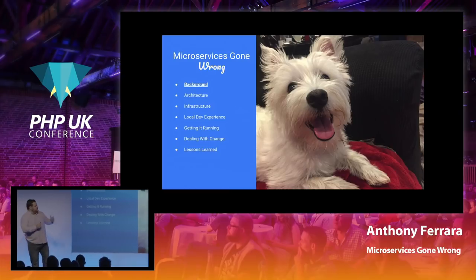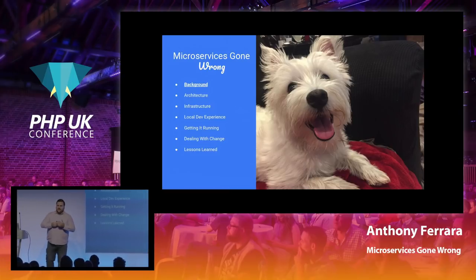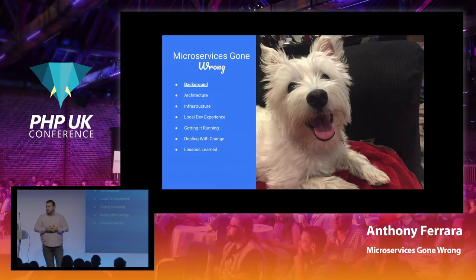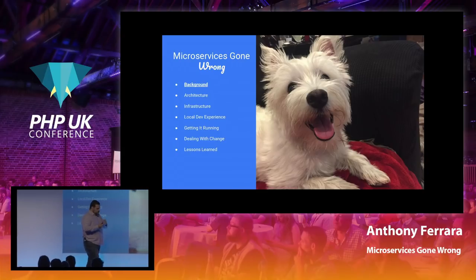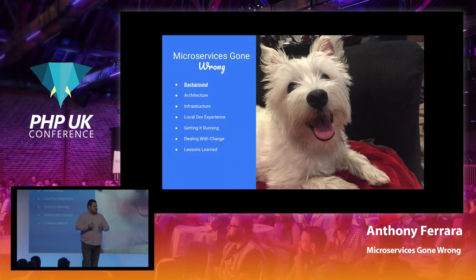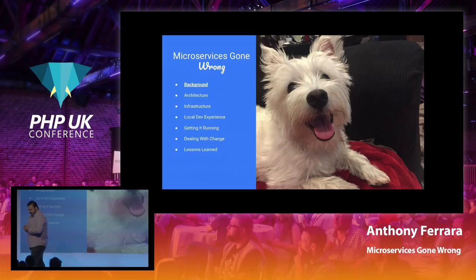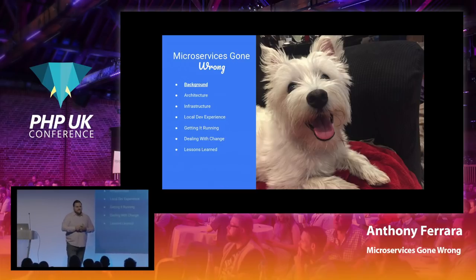This journey is going to be assisted by my cute little puppy, Adda Douglas — she's going to be in some of the interludes. But really I want to take you on the background around what the team was, what the technological and business problems we were trying to solve were, the architecture involved, what we chose, why we chose it, how we got this platform up from a local dev environment into production, dealing with changes from product and bugs, the refactoring we needed to do, and the lessons that we learned.